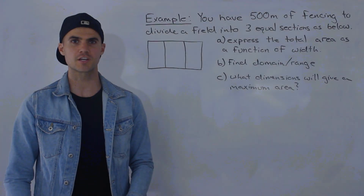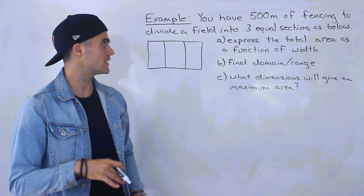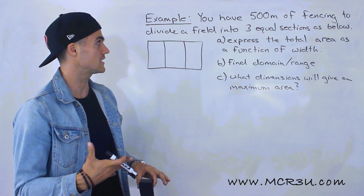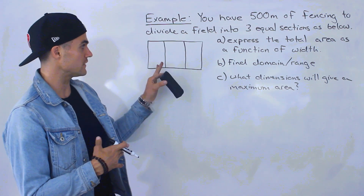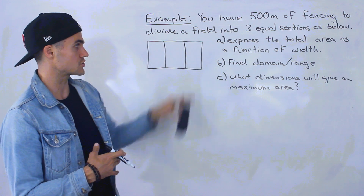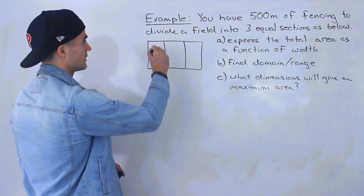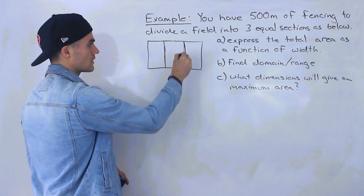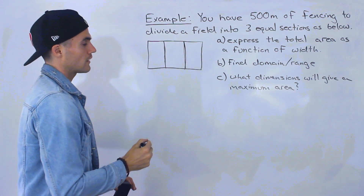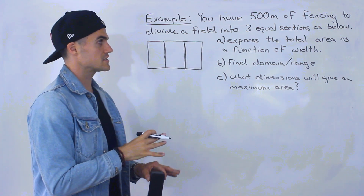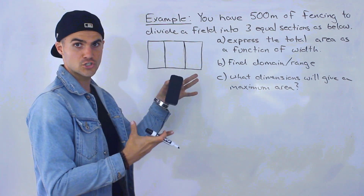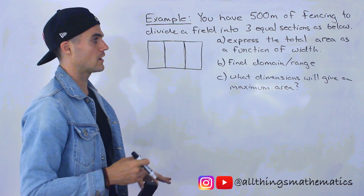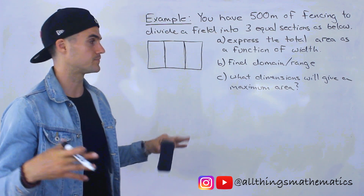What's up everyone, welcome back. Patrick here. In this video we're going to do this example: you have 500 meters of fencing to divide a field into three equal sections. The fencing goes all the way around and also across the interior. We have three questions: express the total area as a function of the width, find the domain and range, and find what dimensions will give a maximum area.